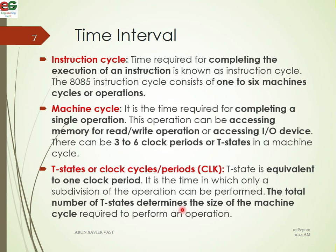Two machine cycles will make up an instruction cycle, but it can be up to six machine cycles — that is one to six machine cycles per instruction cycle. There are three to six clock cycles per machine cycle. The order is: Instruction Cycle, Machine Cycle, and T-State. The numbers are: one instruction cycle contains one to six machine cycles, and each machine cycle contains three to six T-states.